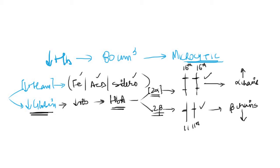If there is decreased production of alpha chains, these are called alpha thalassemias, and if there is decreased production of beta chains, they are called beta thalassemias. This is how both types of thalassemias are classified. In the rest of the video, we'll talk about alpha thalassemias and beta thalassemias and what are the clinical and laboratory findings found in those conditions.